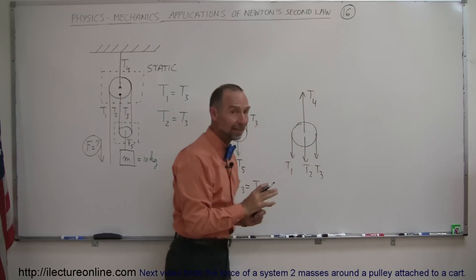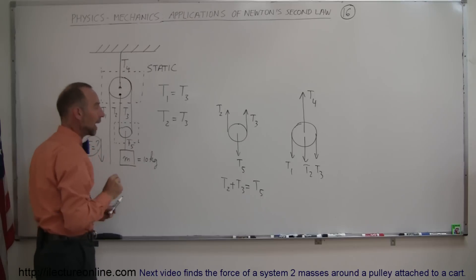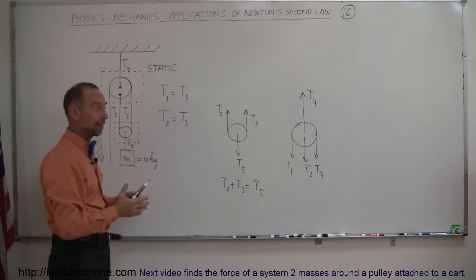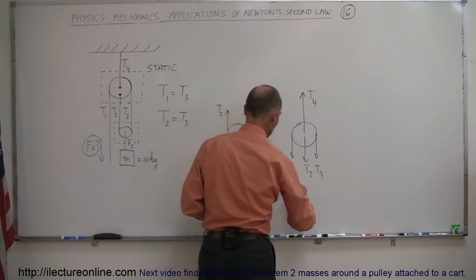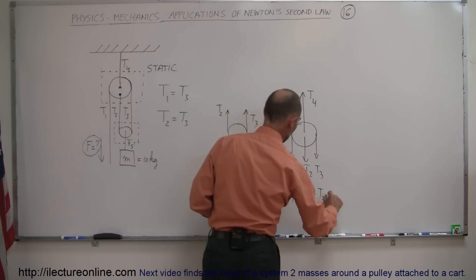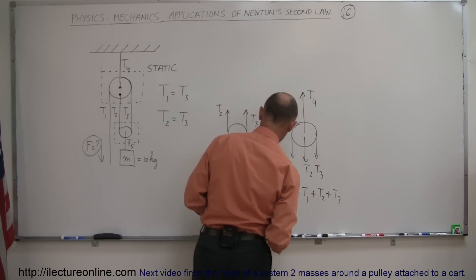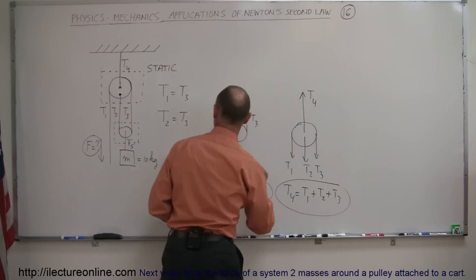Again since this is static, and there's one force pulling this up, there's three forces pulling down. Again you can say that since it's static, there should be no net force in the y direction, which means that the force upward, T4, must equal the three forces downward, T1 plus T2 plus T3. So now we have all the relationships.